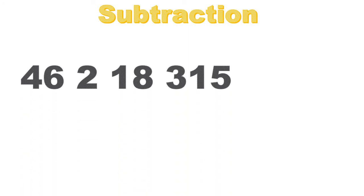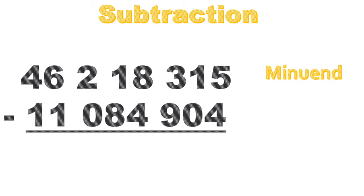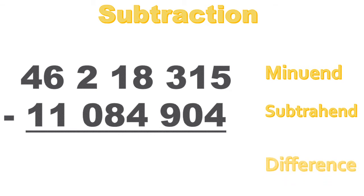Let's move on to subtraction. 46,218,315 is our minuend. 11,084,904 is our subtrahend. The number being subtracted is the subtrahend. The subtrahend is subtracted from the minuend. And the answer is the difference. Let's go ahead and solve to find the difference.